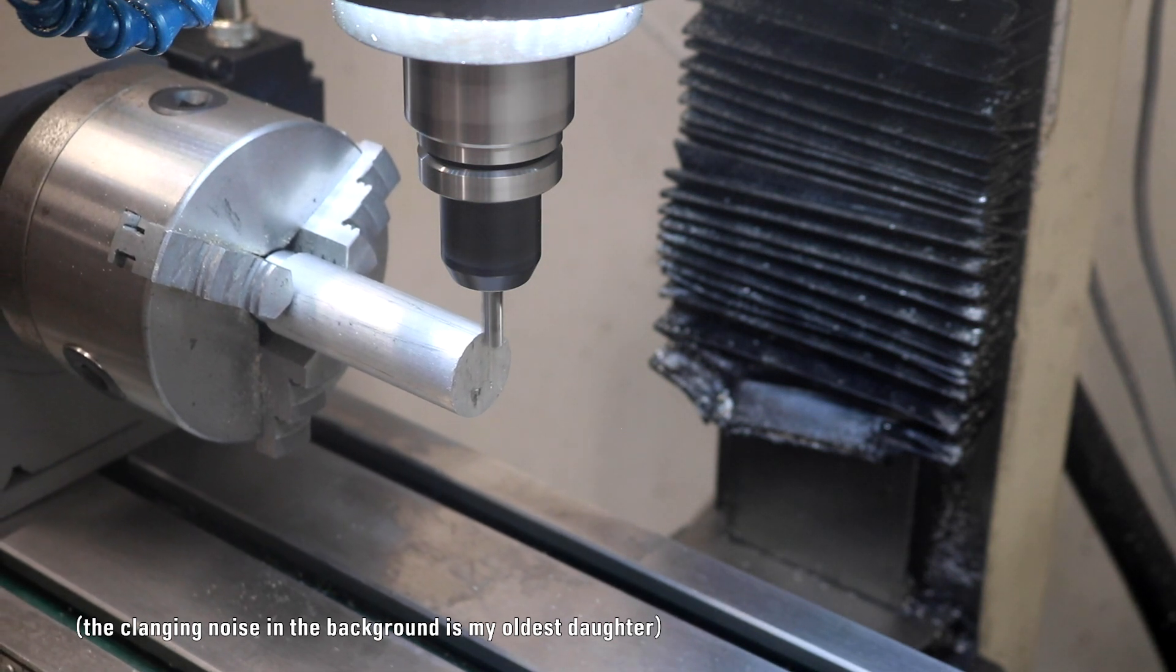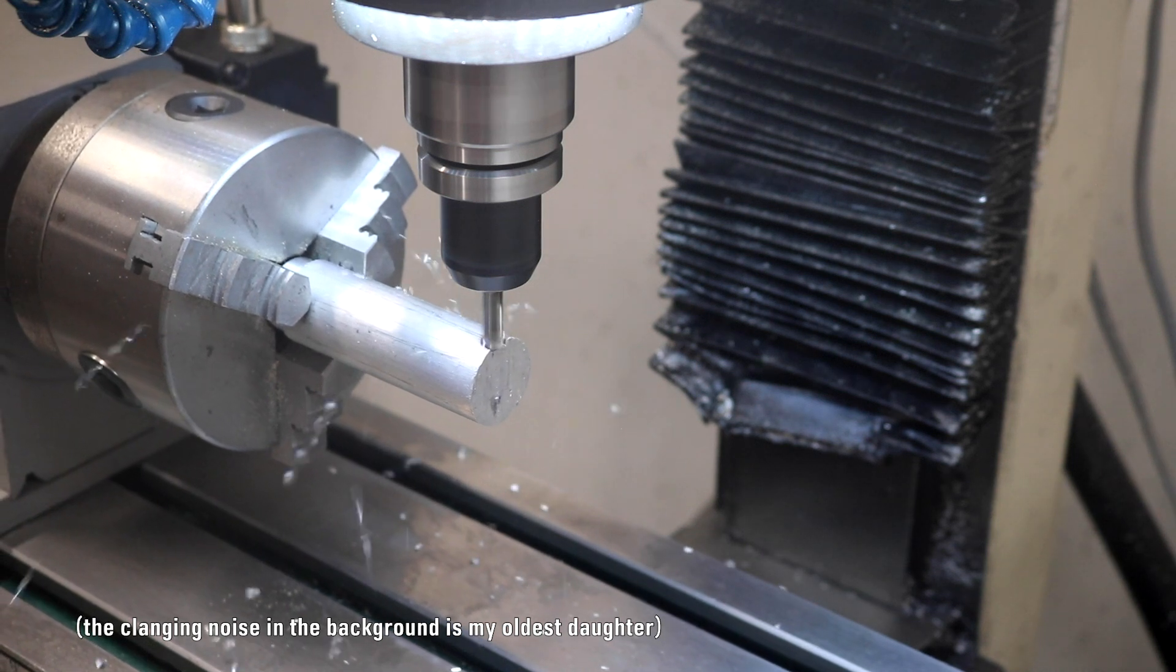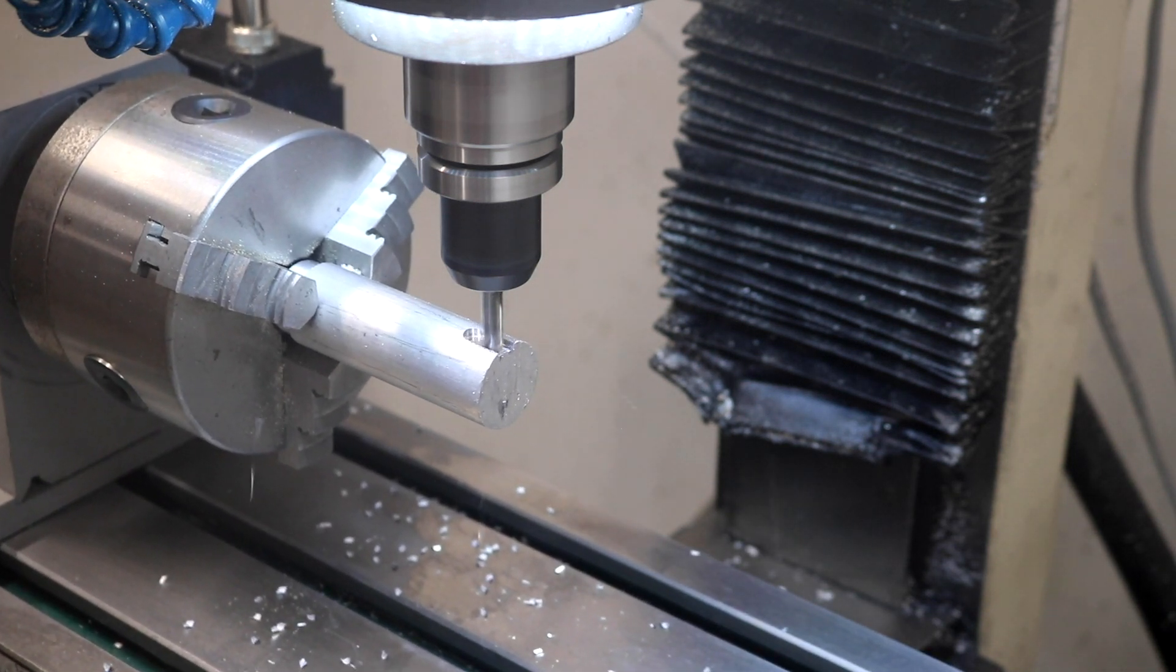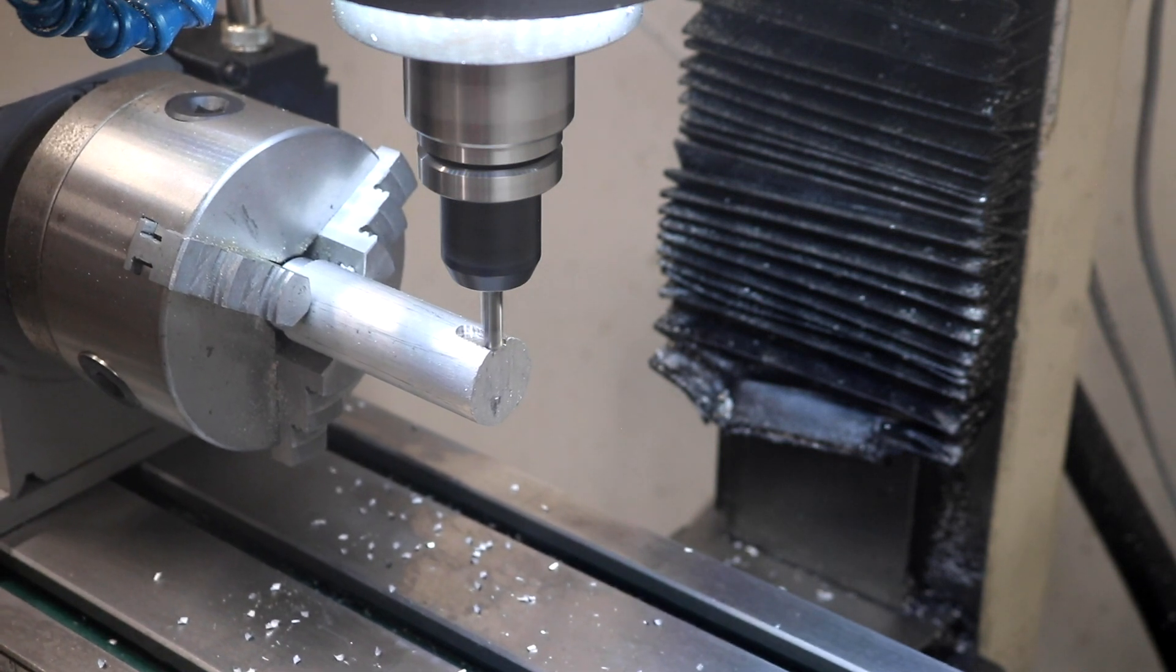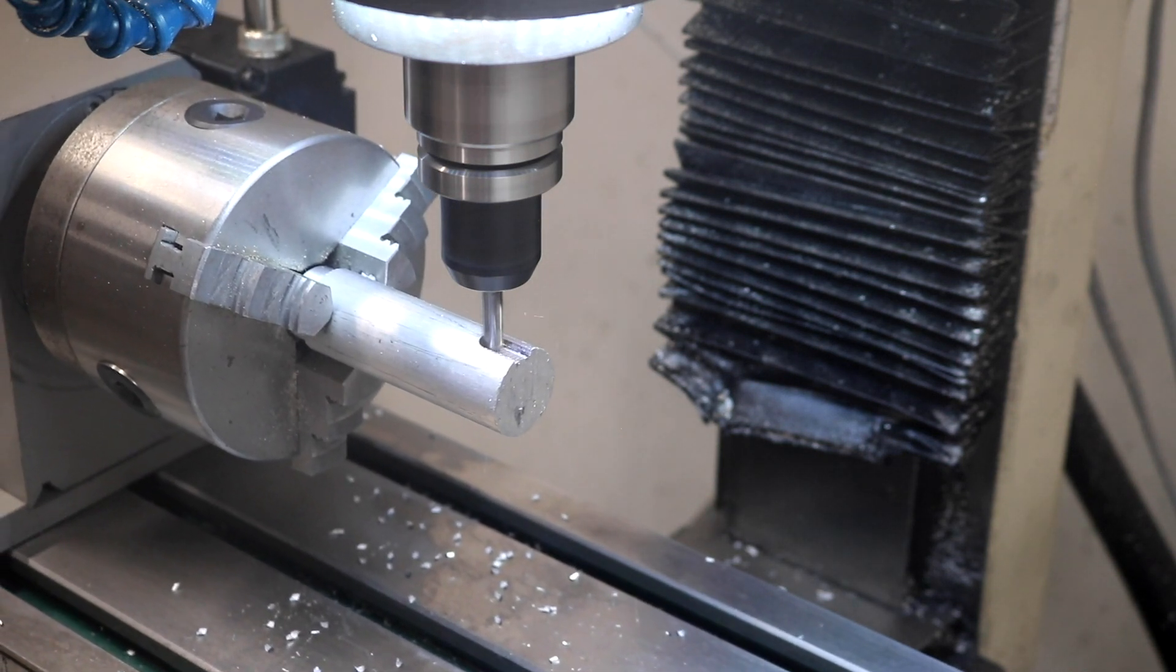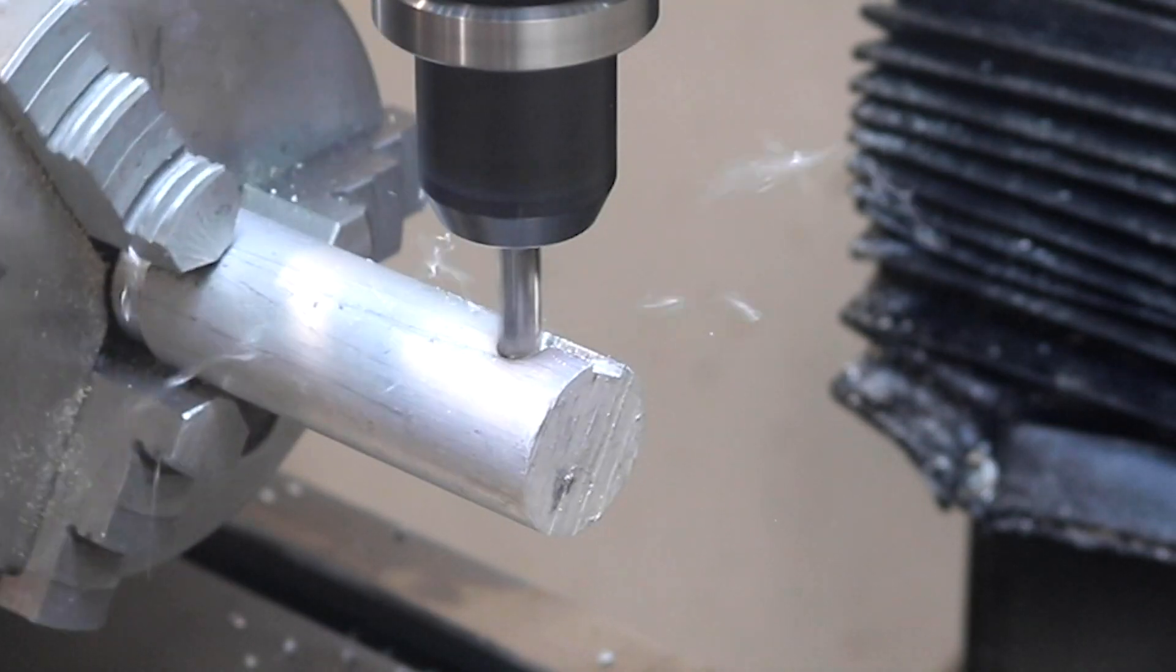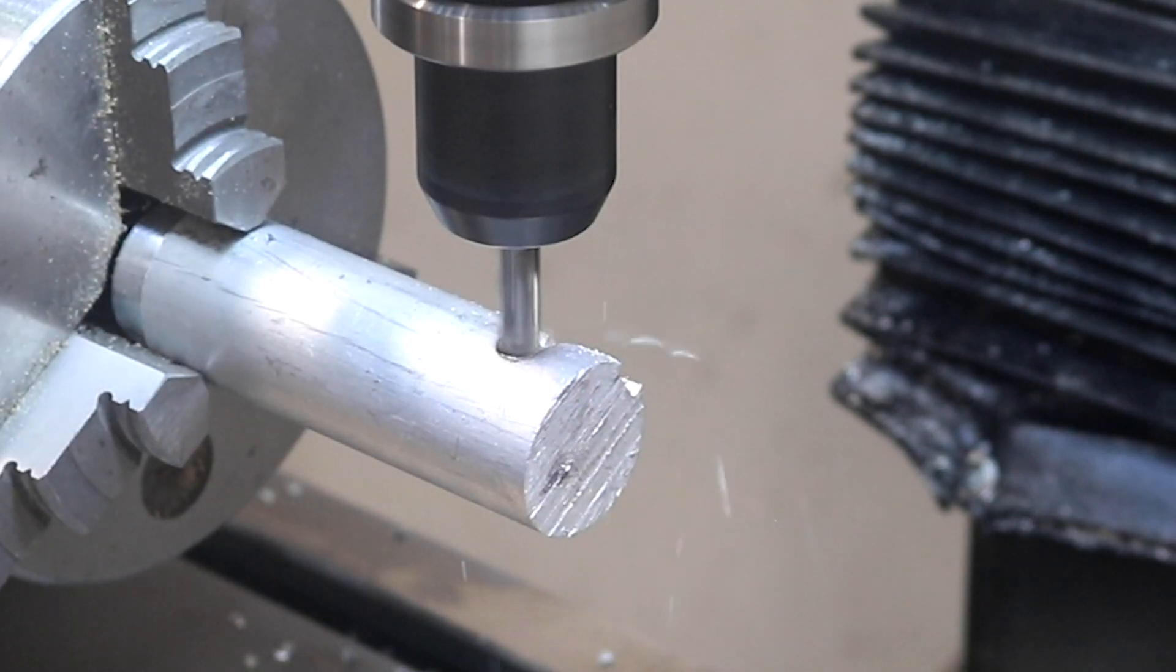These first cuts I'm making are on a piece of scrap that's sticking kind of far out of the chuck. I'm just jogging the mill's axes to check any movement, chatter, vibrations, or any other bad things that may show up. This end mill is a YG1 three flute quarter inch carbide going at 3,000 RPM. It's moving at 15 inches a minute.